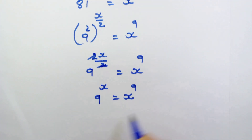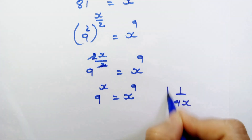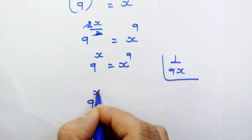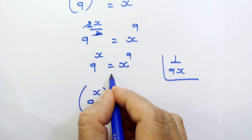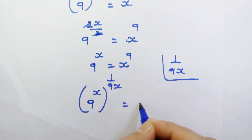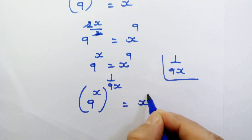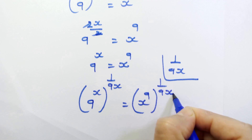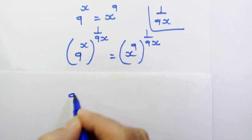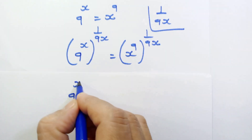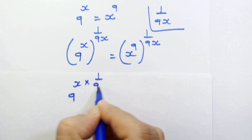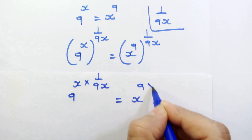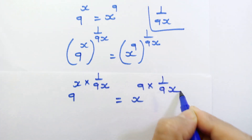Let's raise 1 upon 9x on both sides. So we have 9 raised to x, whole raised to 1 upon 9x, is equal to x raised to 9, whole raised to 1 upon 9x. Here we can write 9 raised to x into 1 upon 9x, is equal to x raised to 9 into 1 upon 9x.